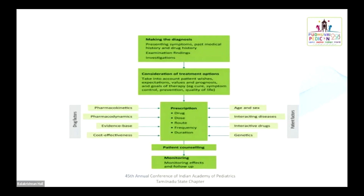While prescribing, we have to take care of drug factors like pharmacokinetics, pharmacodynamics, and evidence-based drugs, and we have to think about cost-effectiveness of the drug. We also have to think about patient factors — that is, child and parent factors — namely age and sex of the patient, interacting diseases, interactive drugs the patient is receiving, the genetics profile of the patient, and importantly for children, the taste and palatability of the drug.